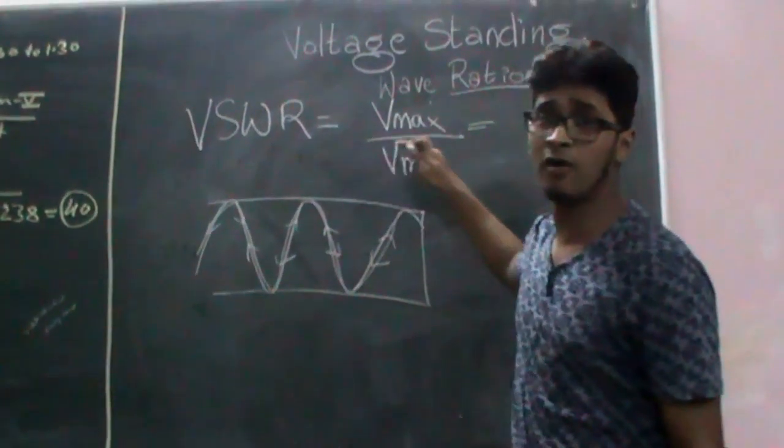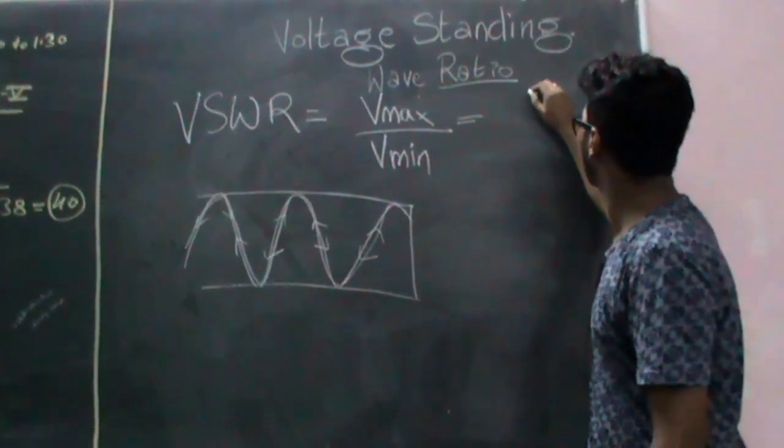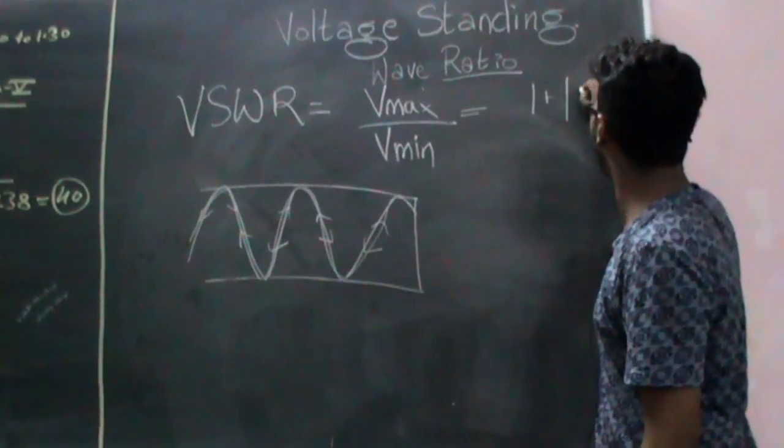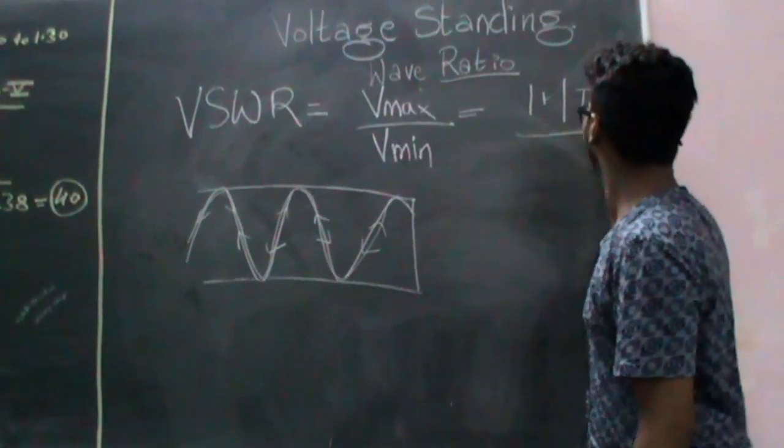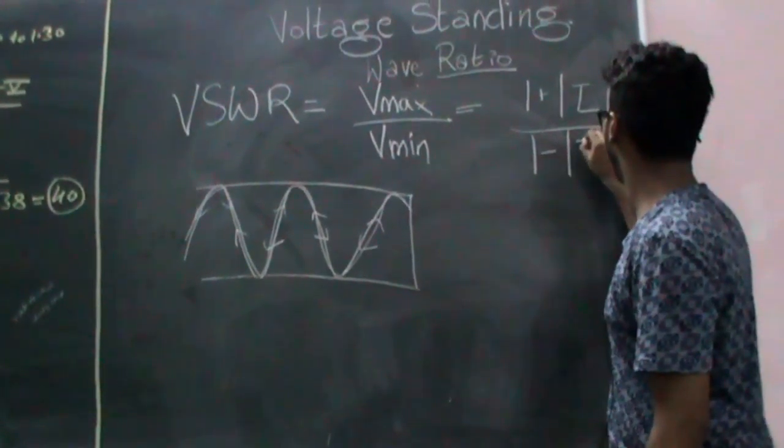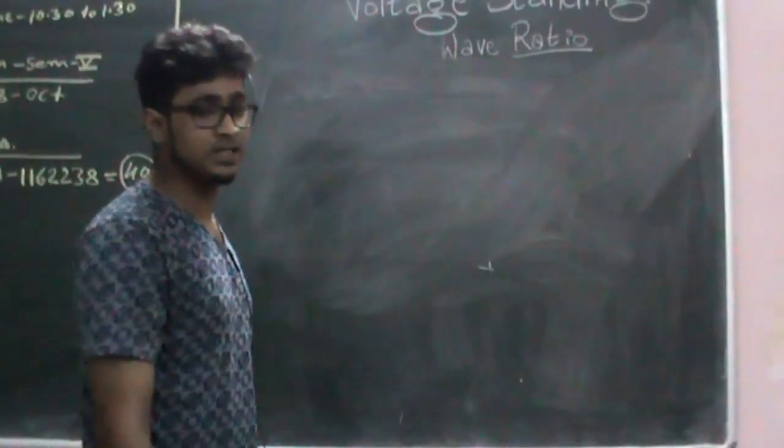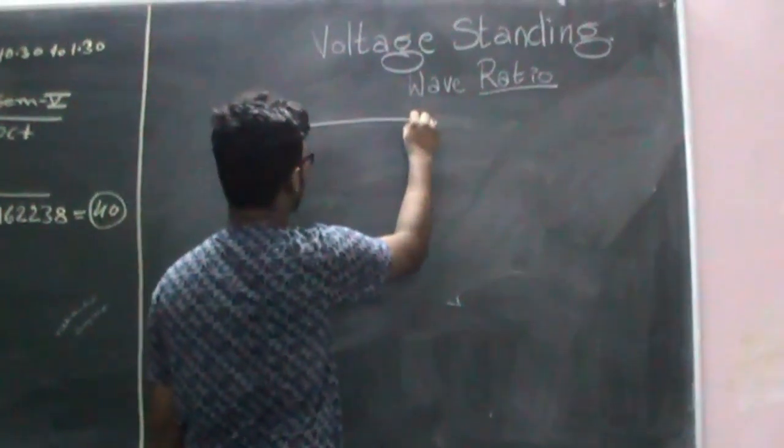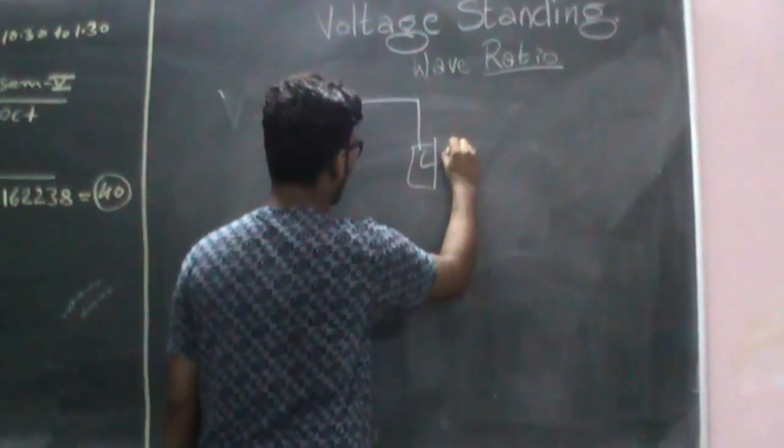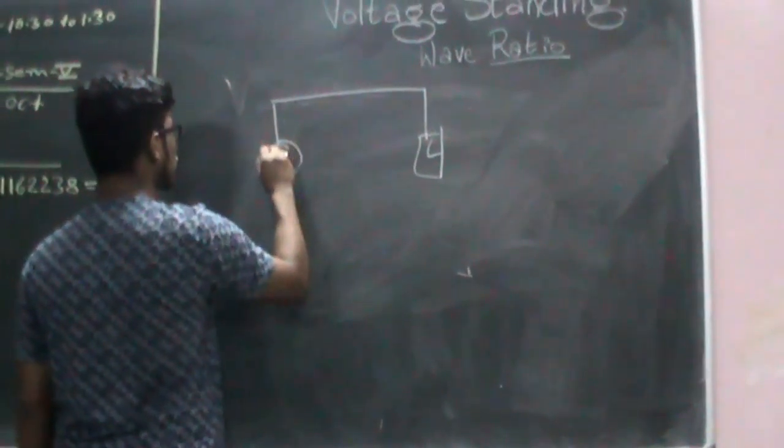And this basic formula can also be given as 1 plus mod of τ to the 1 minus mod of τ. Imagine we have a transmission line which has a load on it and a current source.